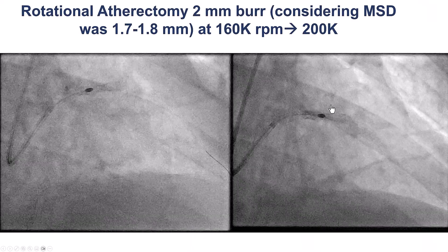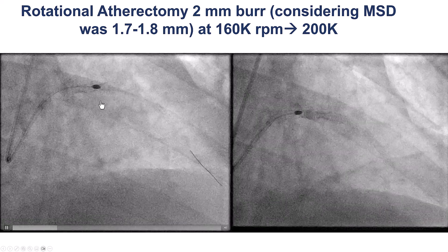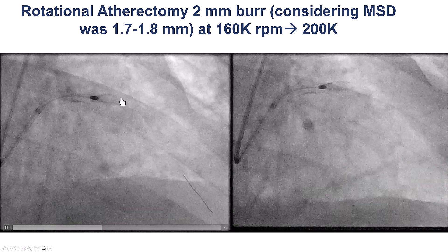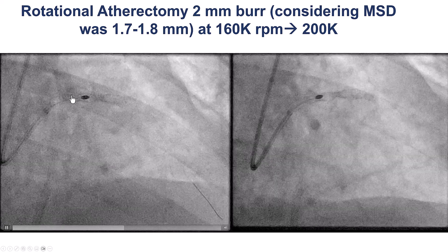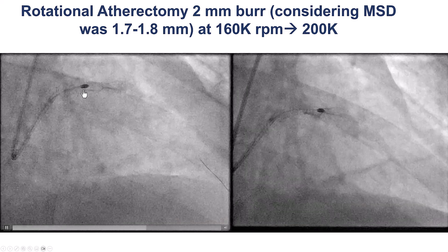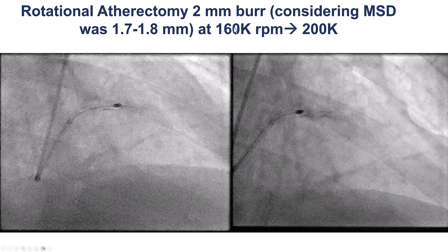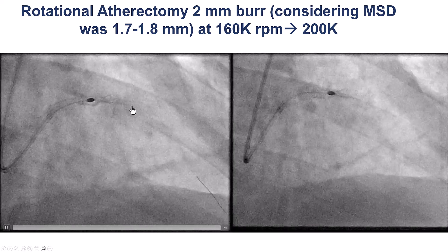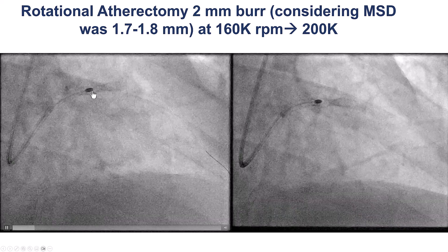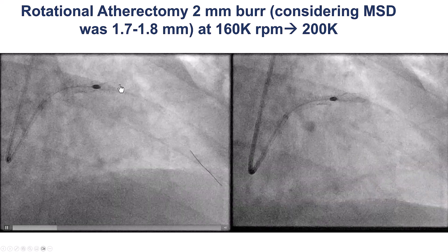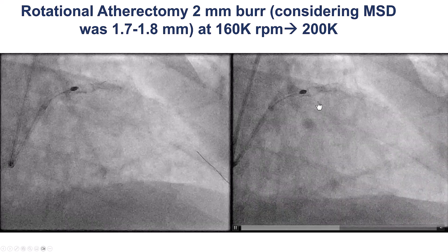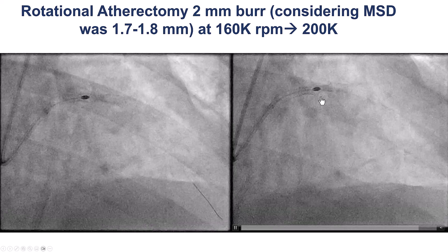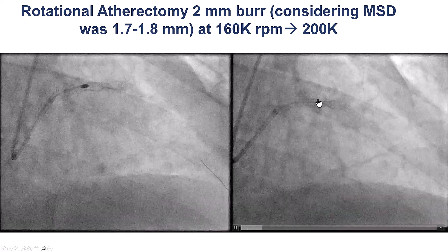We then decided to do rotational atherectomy. We had also been considering going extra-plaque — going outside the area of under-expansion and re-entering further distally — however, this was likely going to be very challenging because of the stent extending proximally and distally. We decided to go with a 2 mm burr. The reason for the 2 mm burr was to minimize the risk of burr entrapment. We were concerned that a smaller burr might get stuck and not be able to come back, so with the larger burr we were more certain of no entrapment, plus it would aggressively modify the lesion and help with expansion.